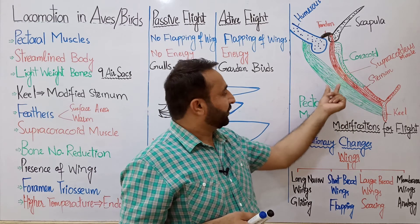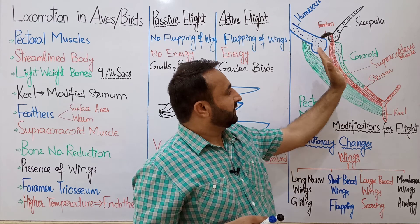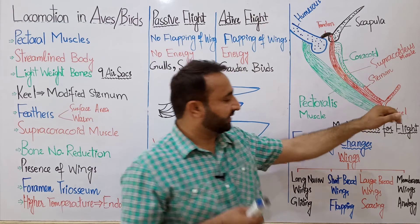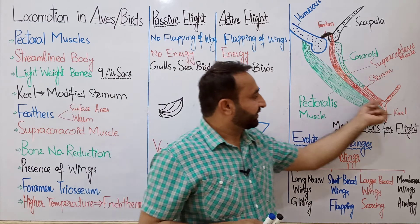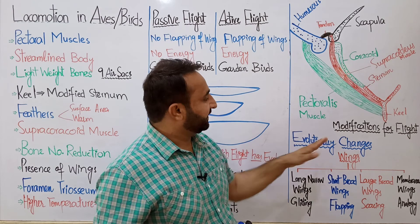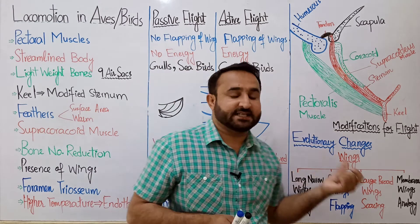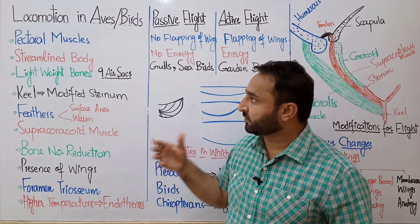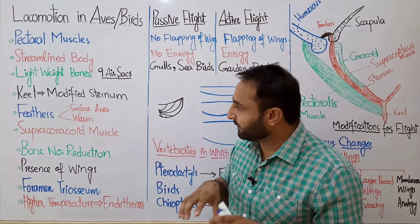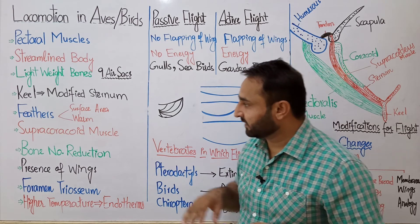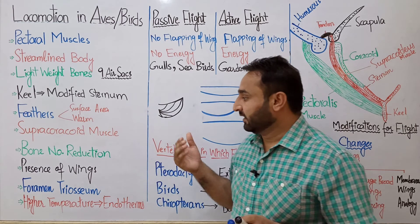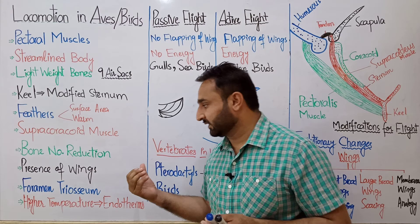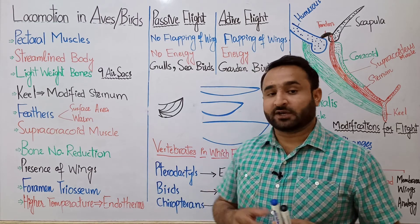اس diagram میں دو muscles ہیں: ایک supra-coracoideus muscle اور ایک pectoralis muscle۔ Supra-coracoideus upward stroke اور pectoralis downward stroke دیتا ہے — جو power stroke ہے۔ دونوں اوپر سے humerus کے ساتھ اور نیچے سے keel کے ساتھ جڑے ہوئے ہیں کیونکہ humerus نے ہی flight کرنی ہوتی ہے۔ Sternum اور keel کی یہ تمام modifications for flight — evolutionary changes in birds — میں pectoral muscles، streamlined body، lightweight bones، keel، feathers، supra-coracoid muscle، reduced bone number، wings، foramen triosseum، اور endothermy شامل ہیں۔